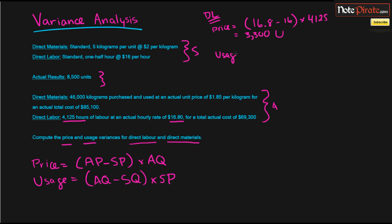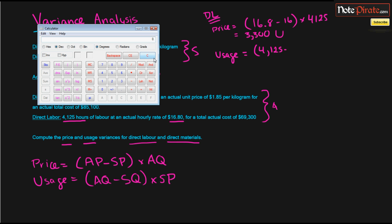The next is our usage variance. And our usage variance is represented by actual quantities minus standard quantities times standard price. So let's find our actual quantities first. So our actual quantity is represented right there at 4,125 hours. Subtract our standard quantity of hours, and they don't give it to us right here, so we're going to have to actually calculate it. So since we produced 8,500 units, and the standard amount is half an hour for every unit, we can just do 8,500 times 0.5. And that will give us, I think, 4,250.